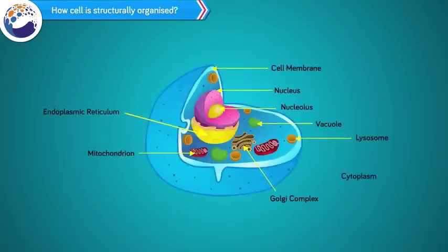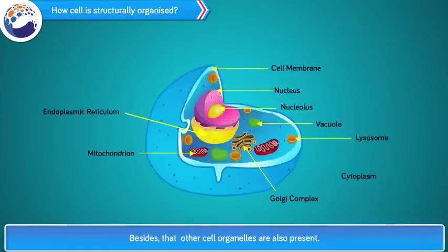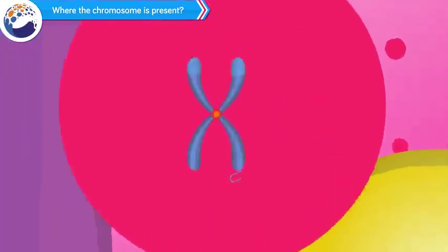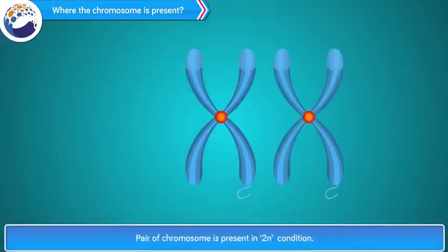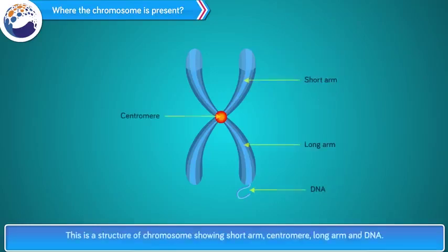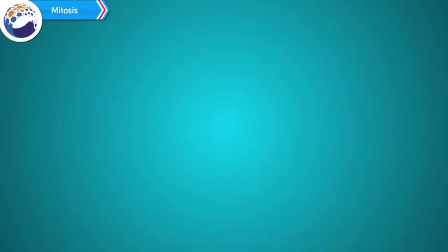Each cell has a nucleus, and other cell organelles are also present. Chromosomes are present inside the cell nucleus. A single chromosome is present in the N condition, and a pair of chromosomes is present in the 2N condition. This is the structure of a chromosome, showing the short arm, centromere, long arm, and DNA.